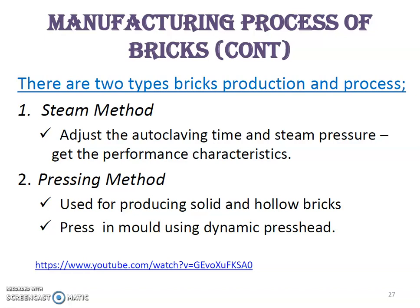There are two types of brick production processes: the steam method and the pressing method. The steam method is where we adjust the autoclaving time as well as pressure to get the performance characteristics of the bricks. The pressing method is used for producing solid and hollow bricks where we press in a mold using a dynamic press head.